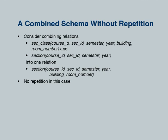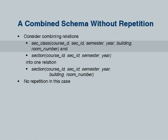Here is another example: we have section and section-class relationship combined into one, with course ID, section ID, semester, year, building, room number. This could have been two relations from the ER design, but we combined them. Here there is no problem with repetition. These two examples illustrate that in some cases there is repetition and in some cases there is not, and functional dependencies help us understand which case applies.